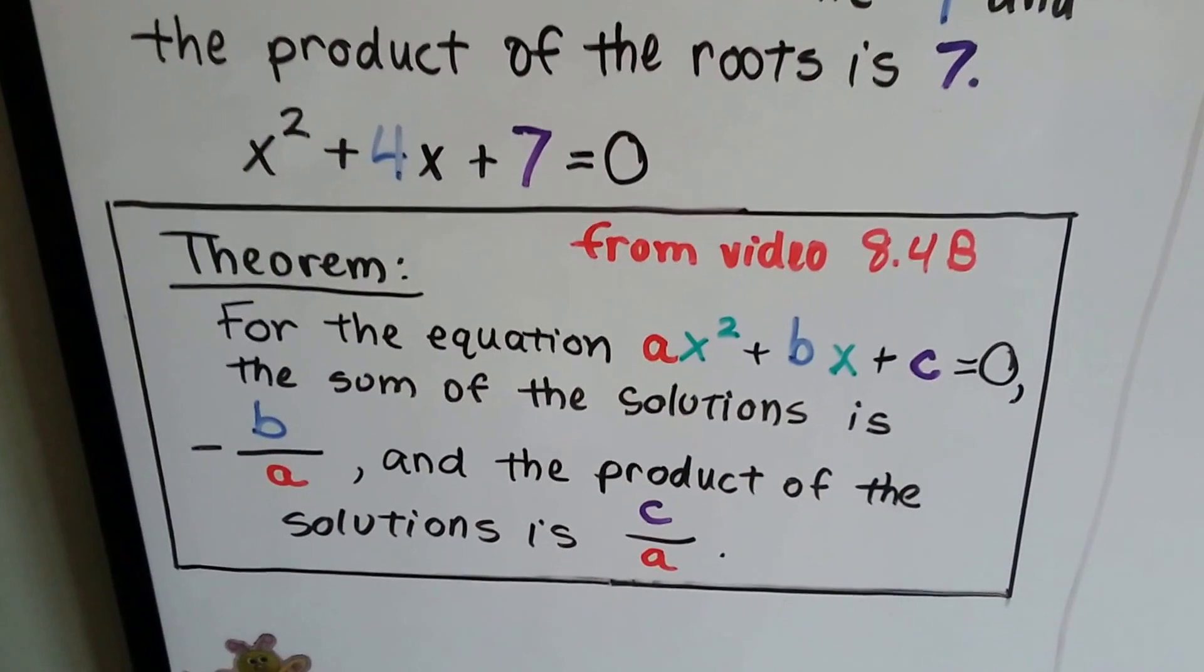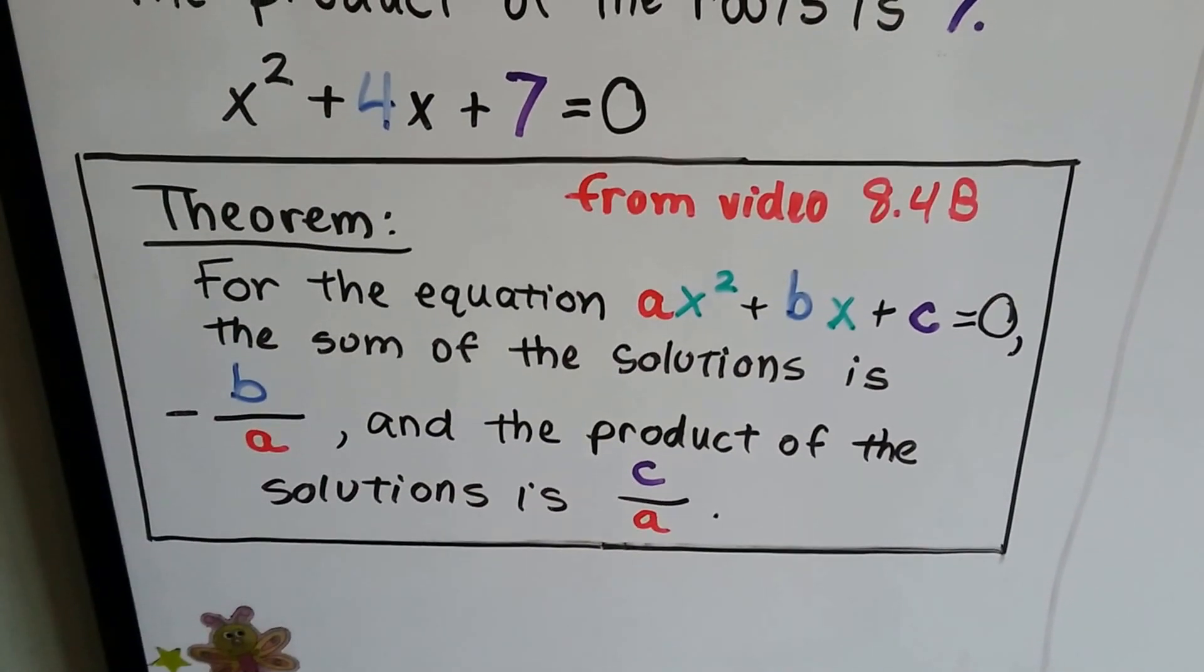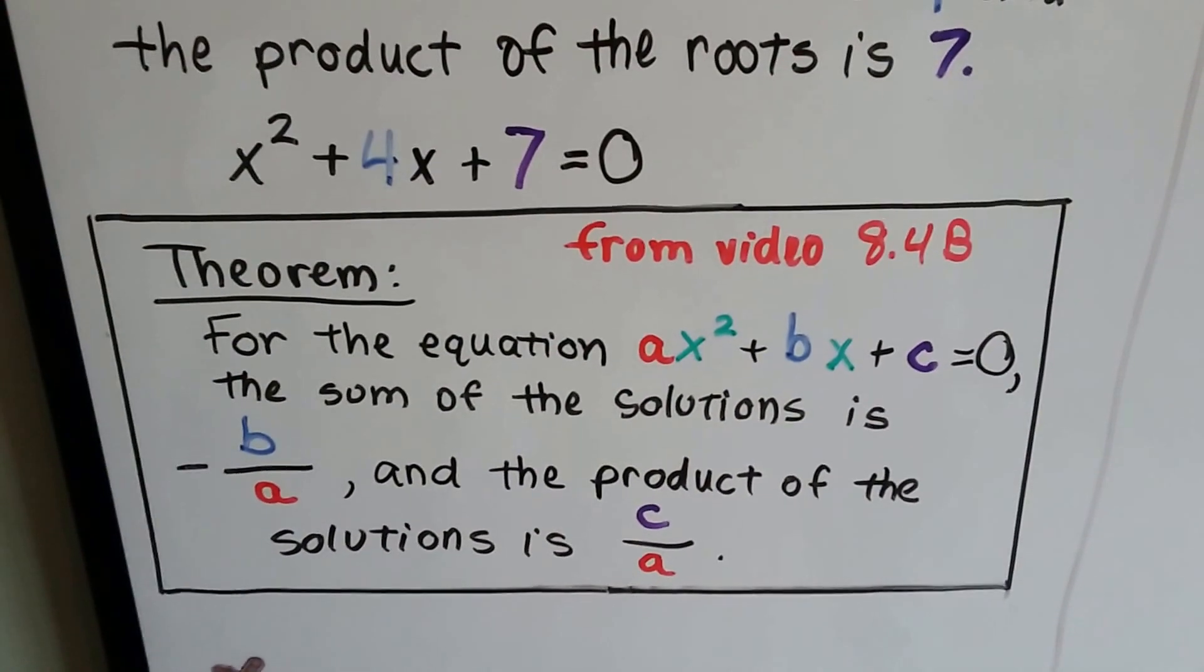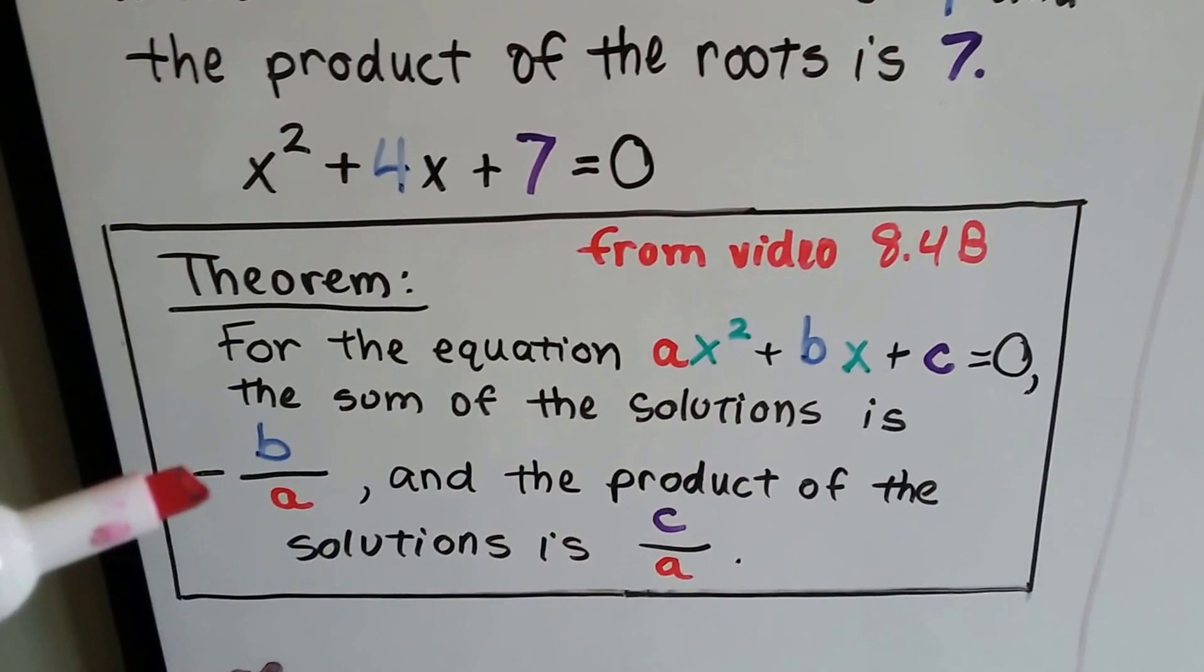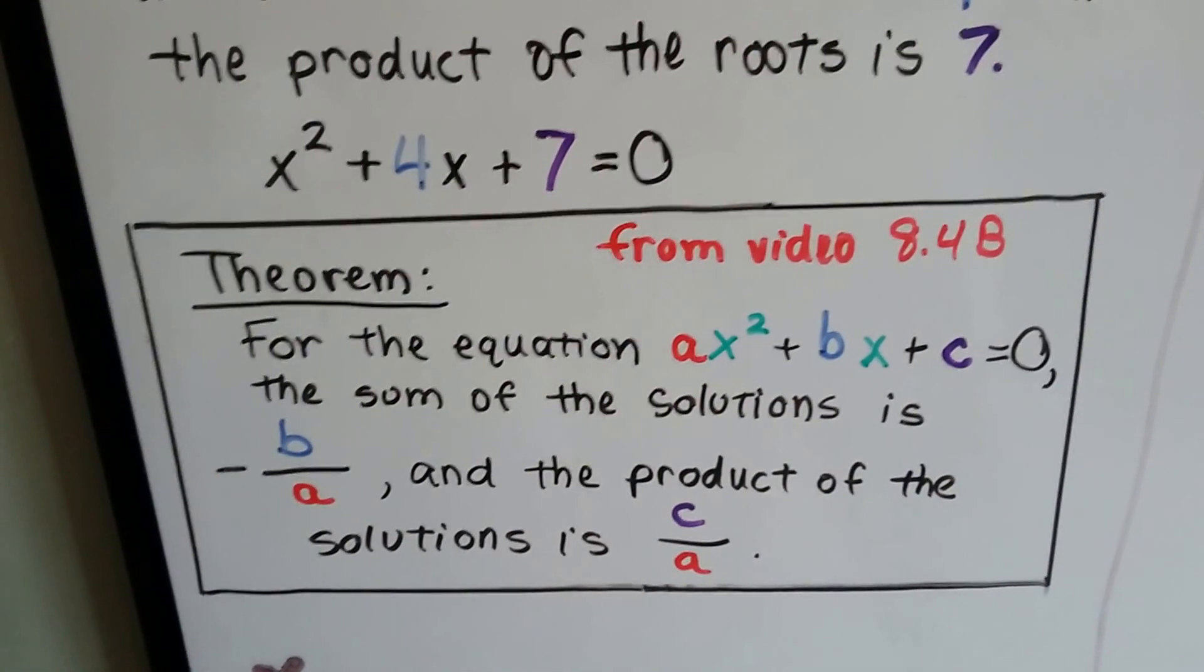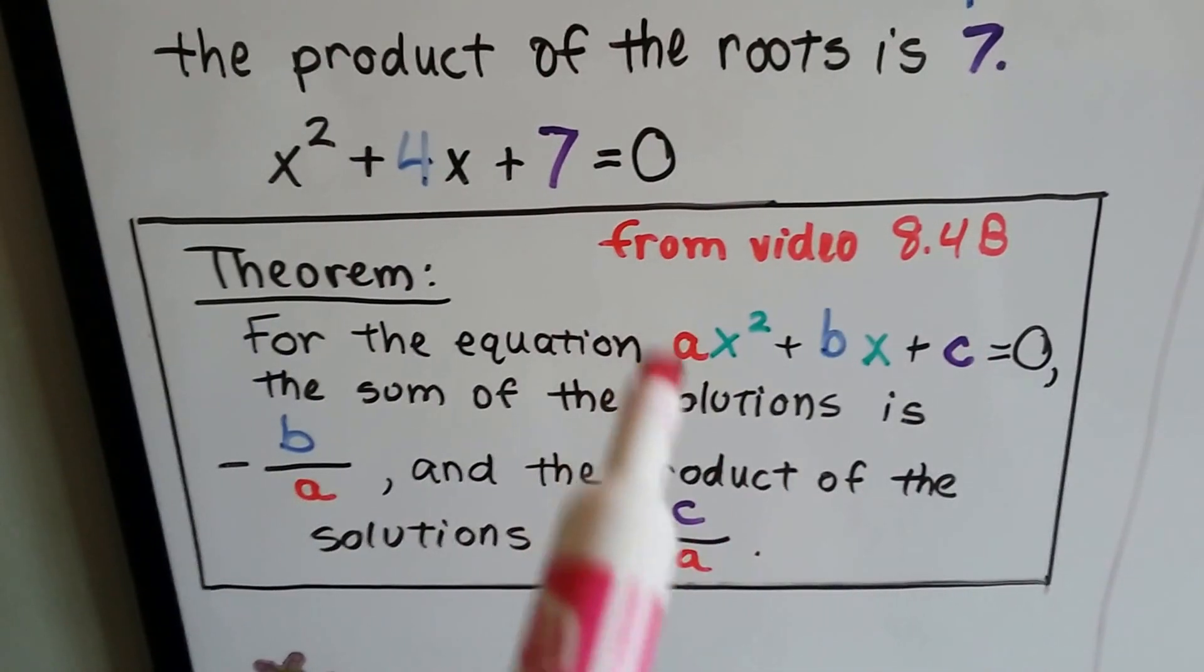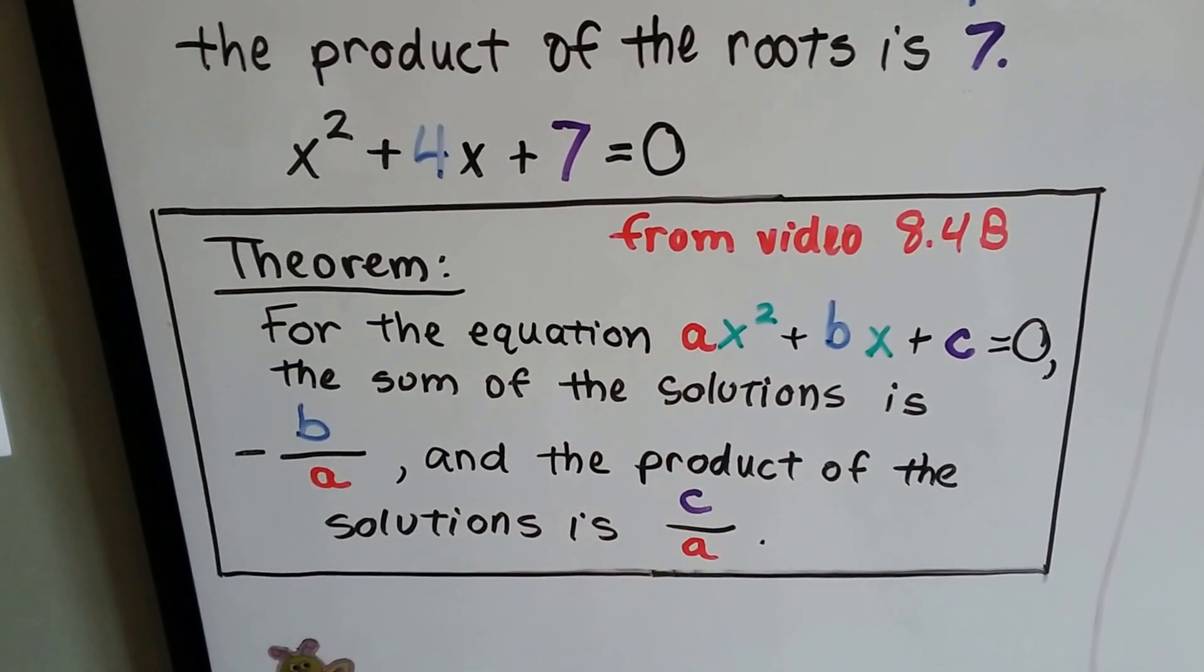Now we had a theorem in the previous video, and I rewrote it here. For the equation ax² + bx + c = 0, that standard form of a quadratic equation, the sum of the solutions is -b/a, and the product of the solutions is c/a, which is the constant over that second degree coefficient.